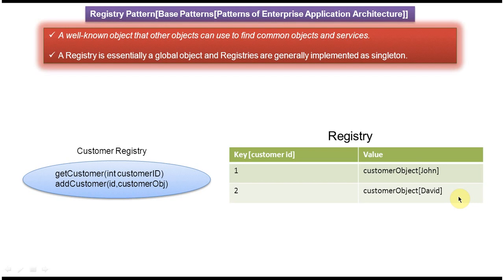Now if you read the definition again, you will understand it easily. A well-known object — here the well-known object is the registry — that other objects will use to find common objects; in this case the common object is the customer object. Other objects that want the customer object for business logic will call the customer registry's getCustomer method to get the customer object, and once they get it they can access its attributes, properties, and methods. Thanks for watching, bye.